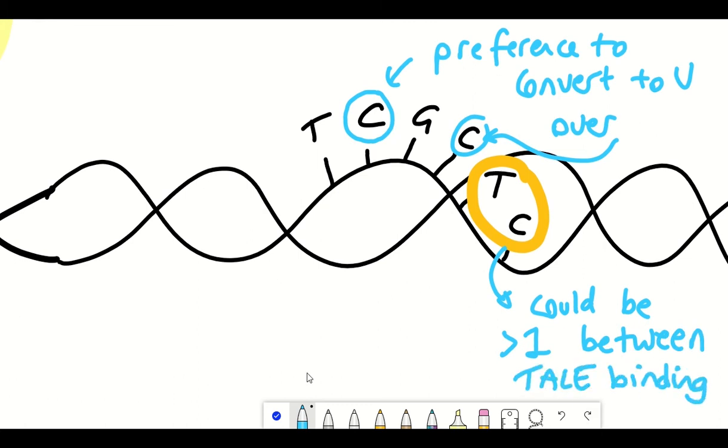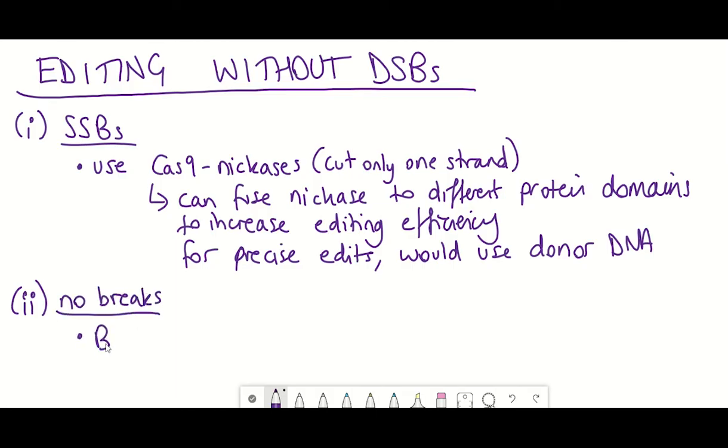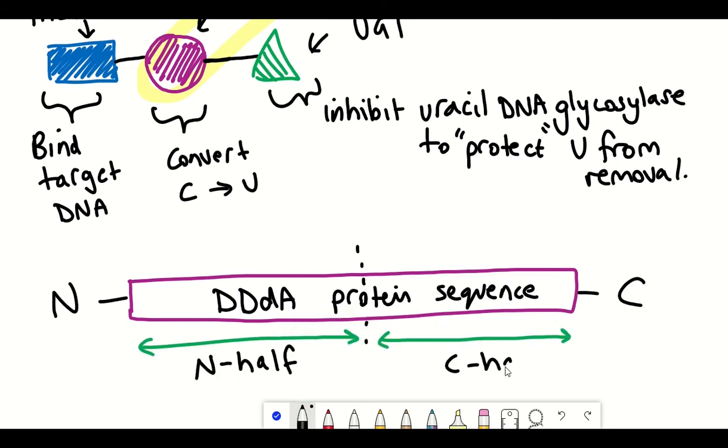So let's go back to our two criteria, safety and efficiency. So firstly, because the system doesn't induce double strand breaks, but no breaks at all, then in addition to the fact that by splitting up DddA, we reduce the toxicity to the cells, the system can be considered fairly safe, although I will come back to this a little bit later.